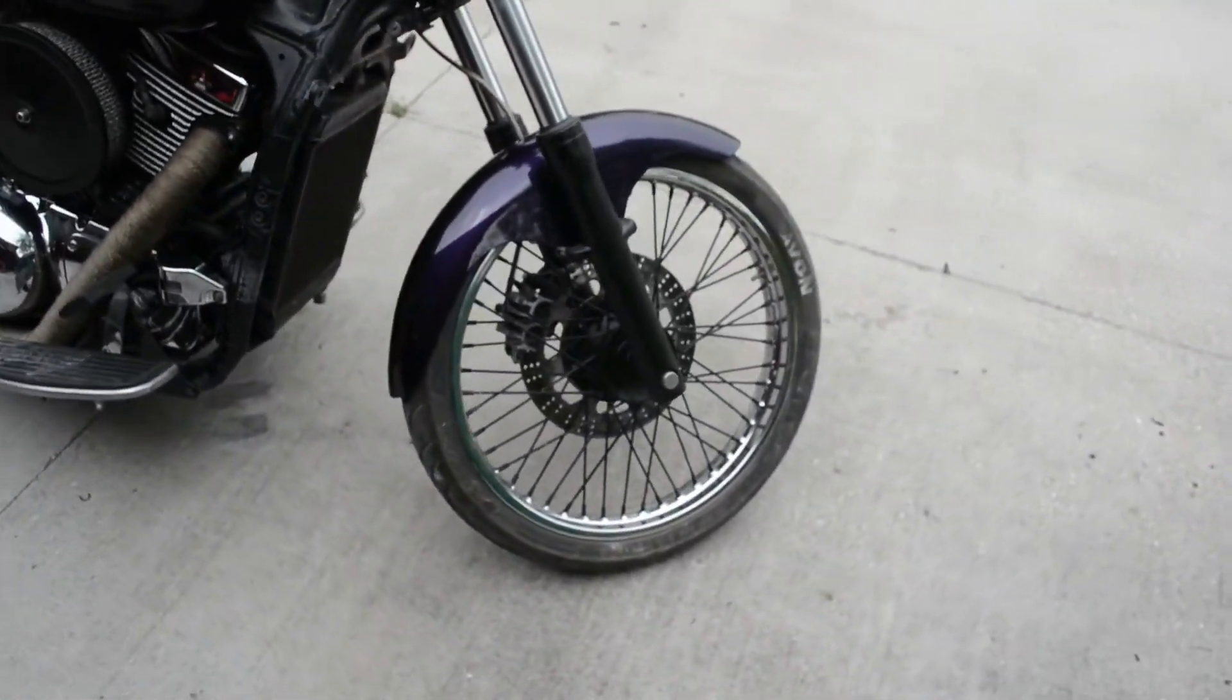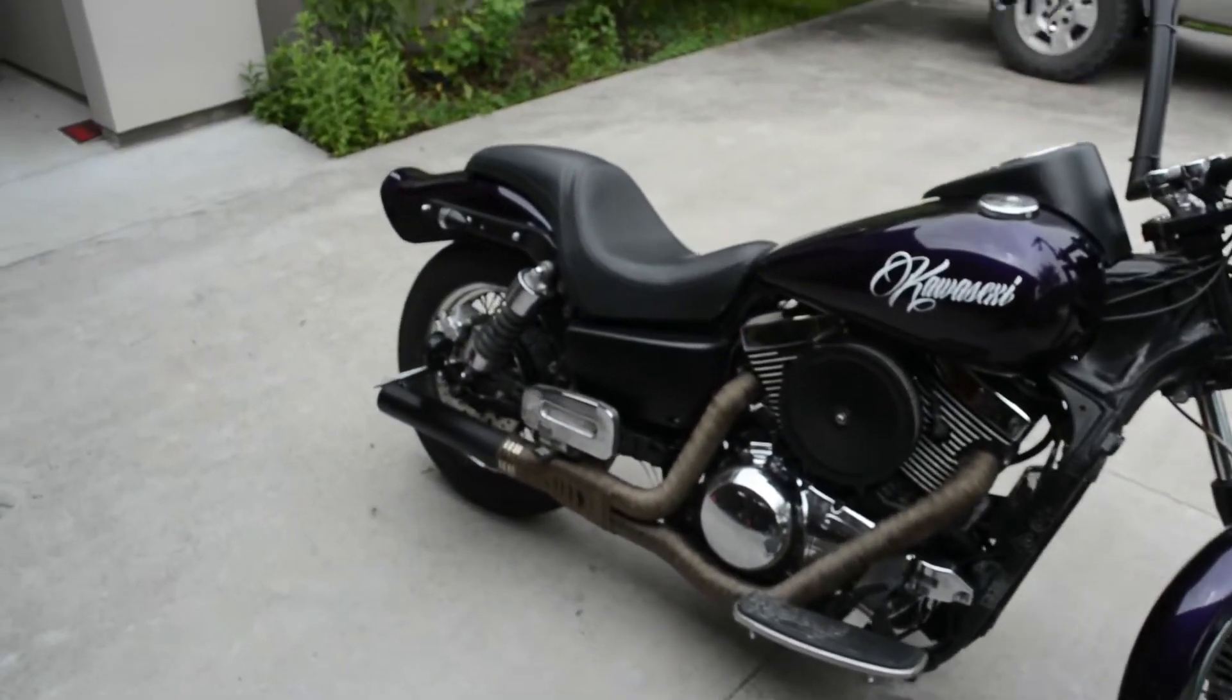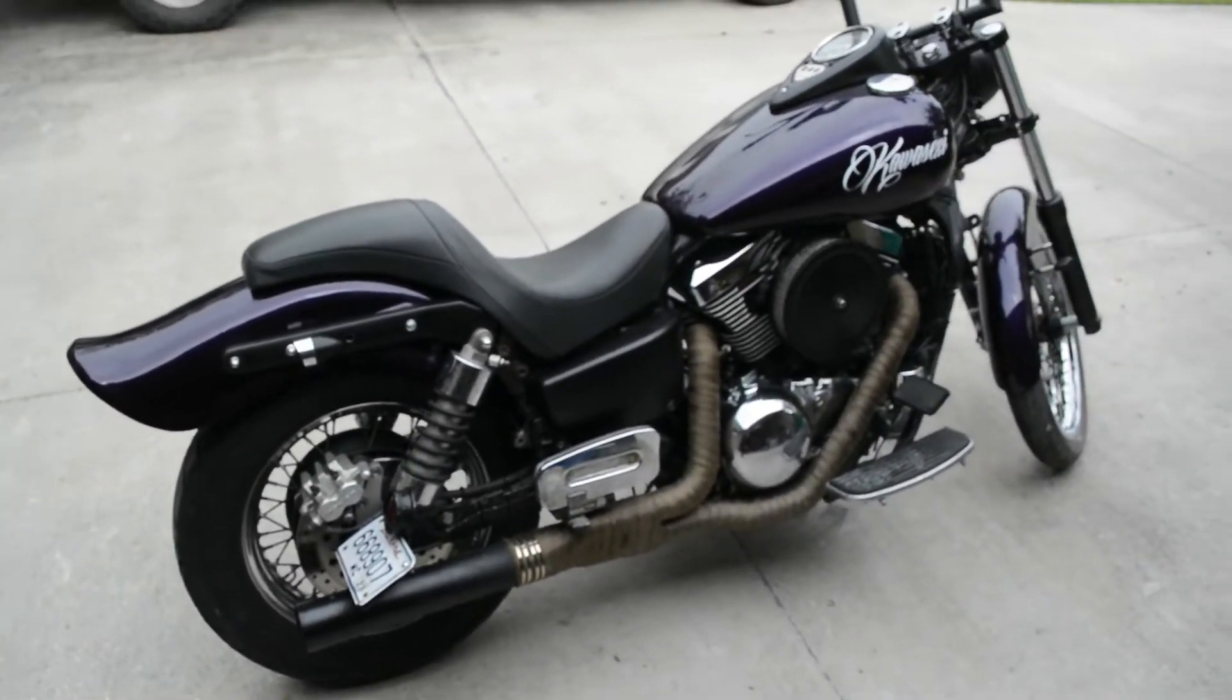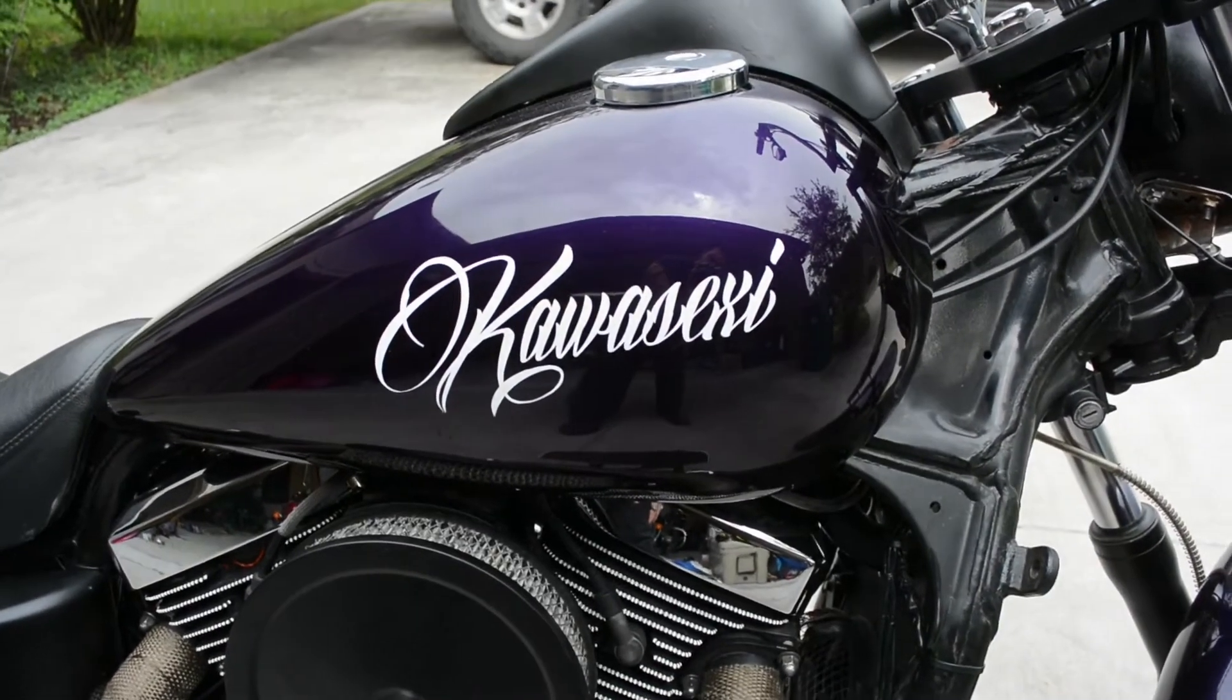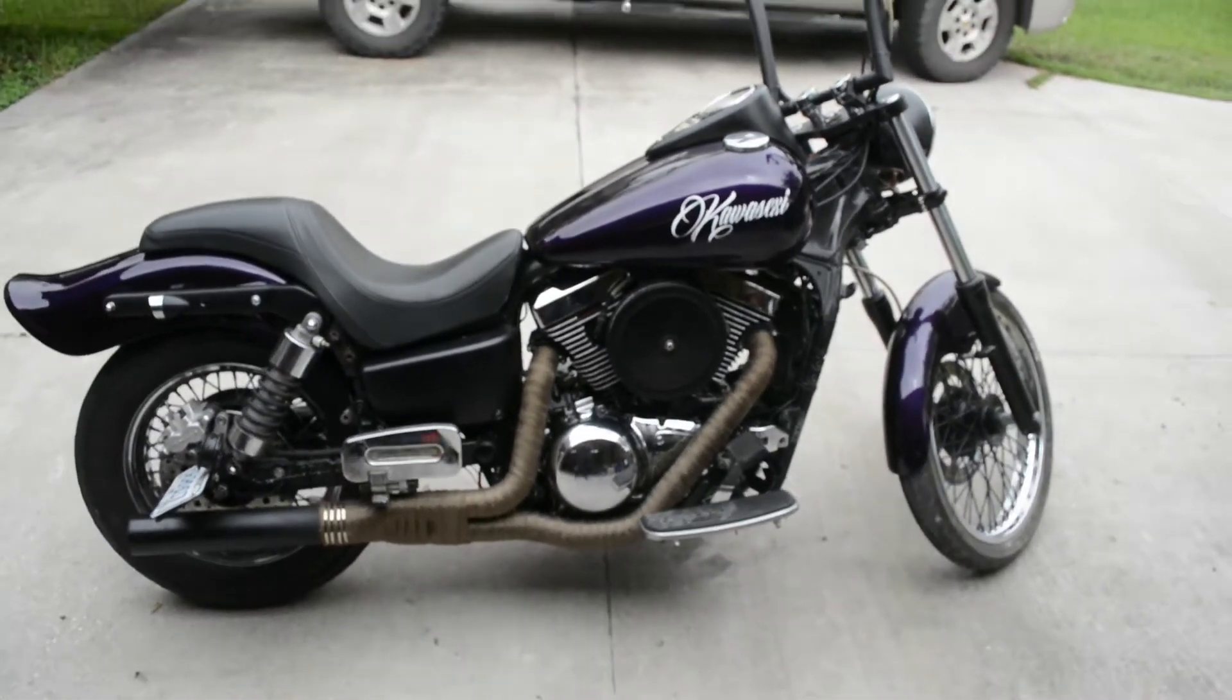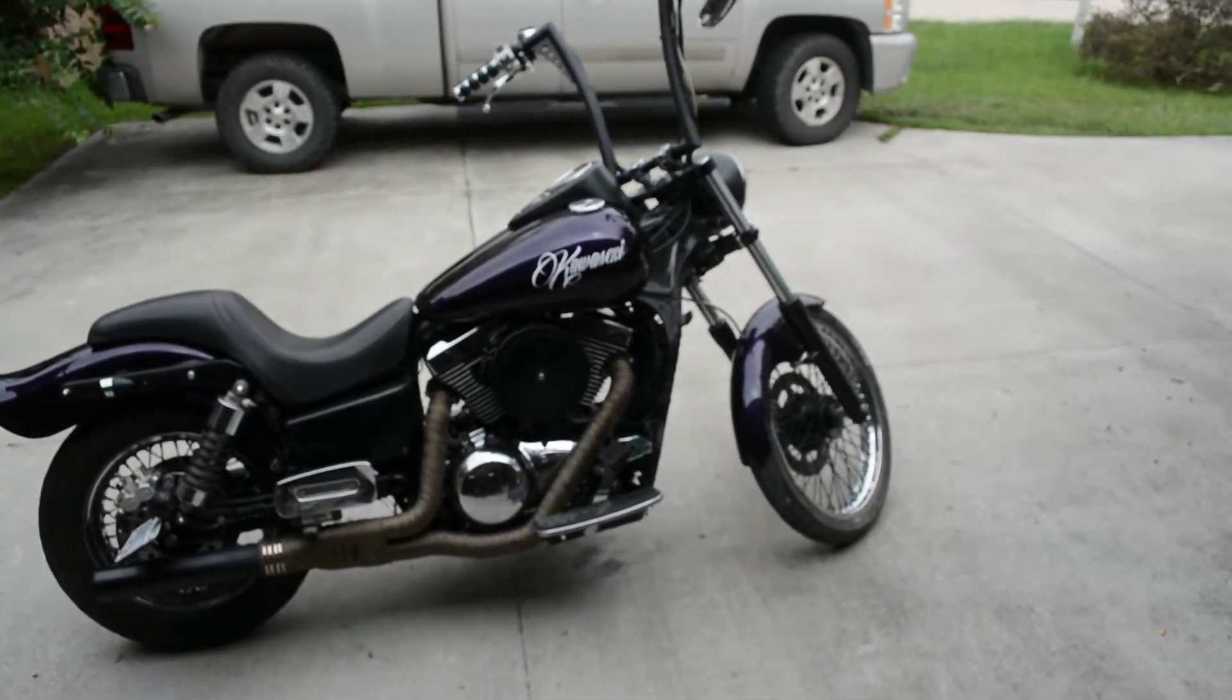We got a 21 inch front wheel, a lot less bulky rear fender, and my girlfriend named her Kawa Sexy. Hell yeah. Anyway, I'll do another video on this bike later on.